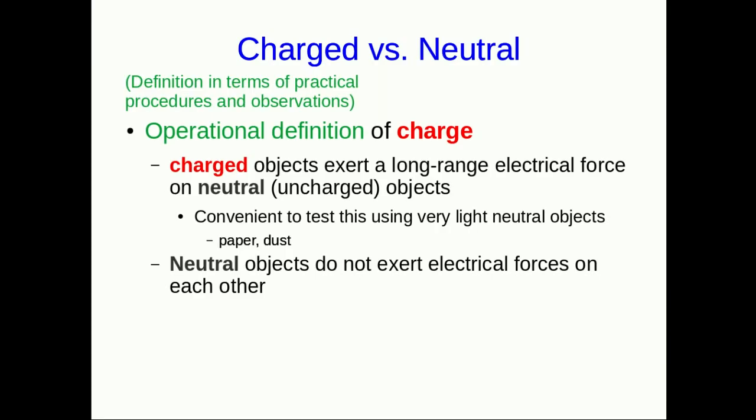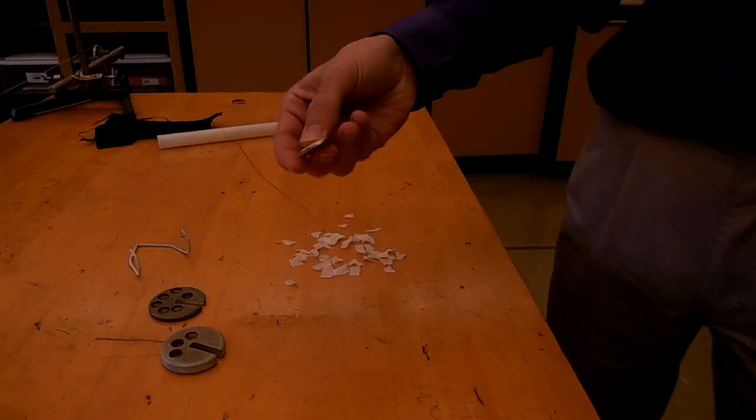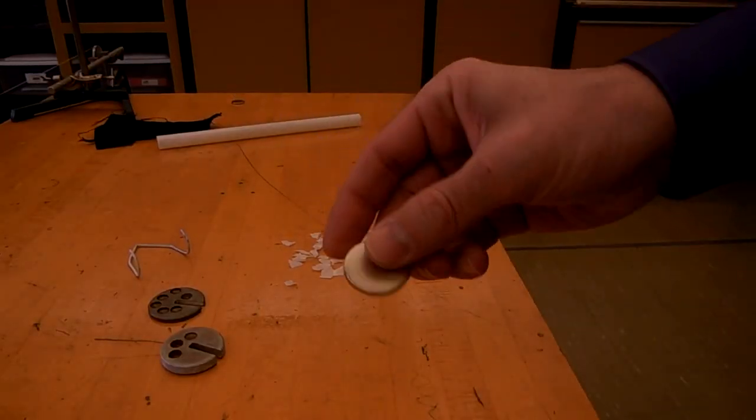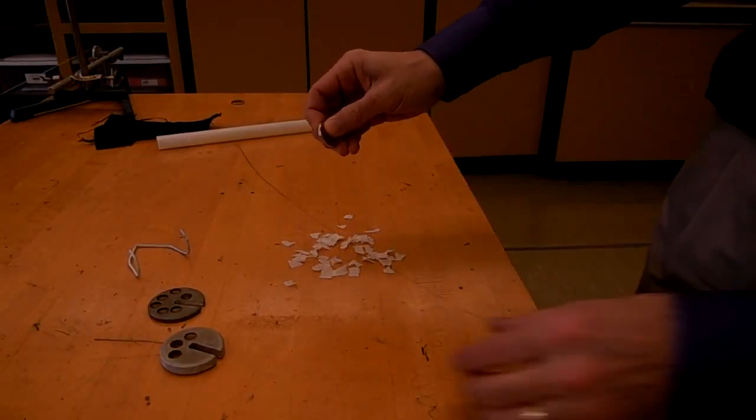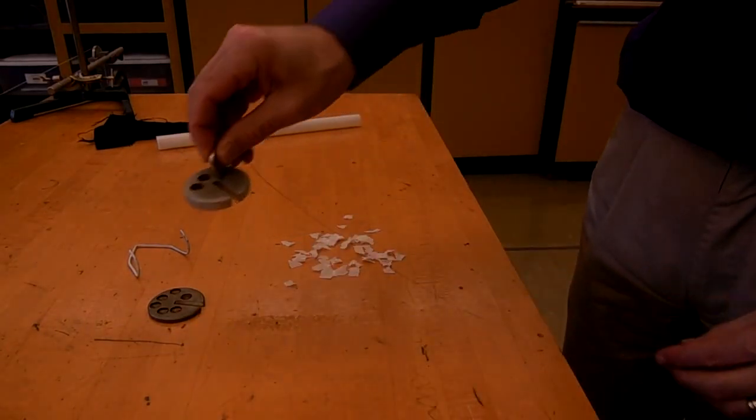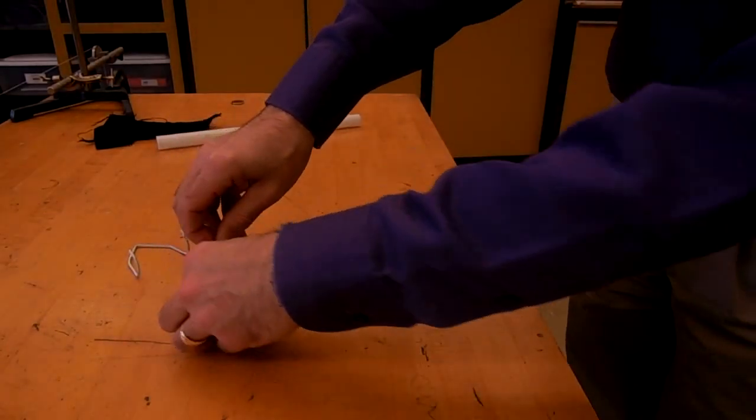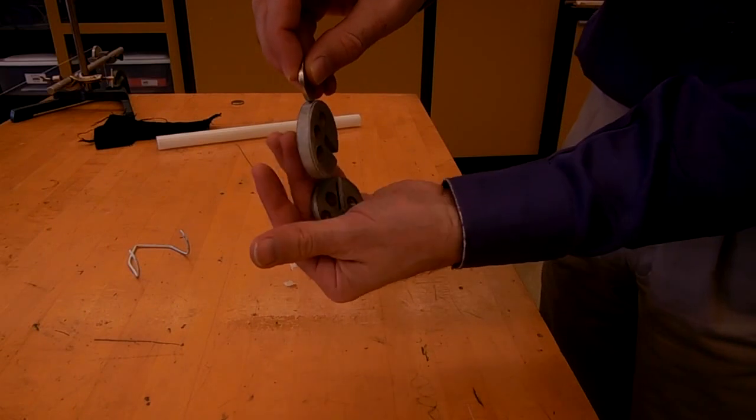The point here is that we have a simple experimental test that allows us to distinguish between things that are charged and things that are neutral. We can see other things like, for example, this magnet. The magnet is different. There are lots of things it'll pick up, all these various pieces of steel.